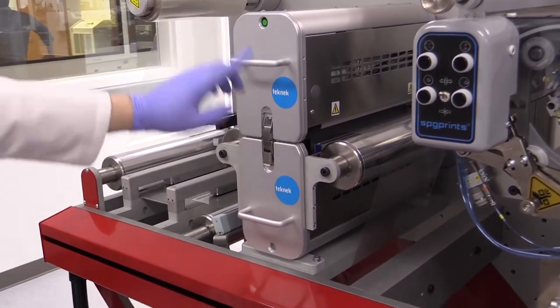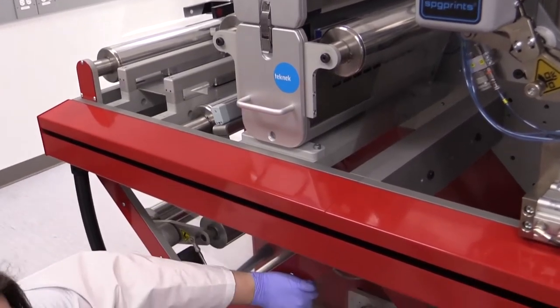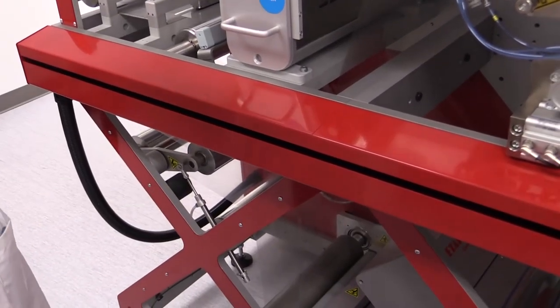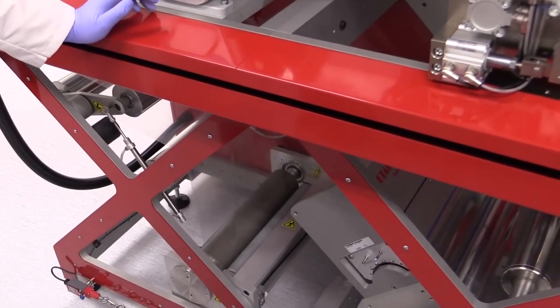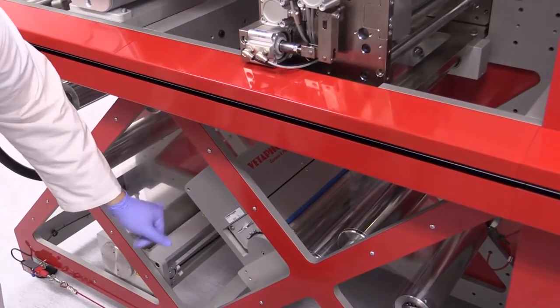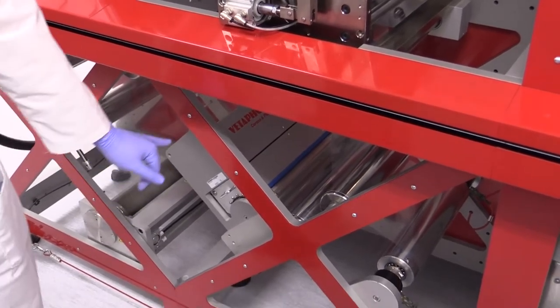The roll then travels through down to the corona plasma treatment to both clean the substrate and modify the surface energy to assist in printing. After the corona plasma treatment we're ready for our first printing step.